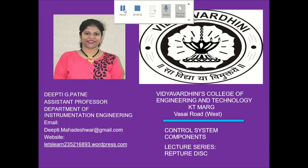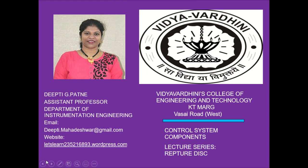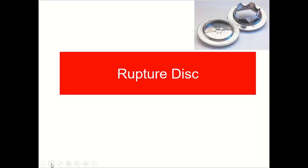Hello all and welcome to the lecture series on control system components. Today we are going to discuss the next safety device, which is a rupture disk. We had seen the first safety device as an alarm annunciator, and this is the next safety device. The function and application of a rupture disk is completely different from that of the alarm annunciator.